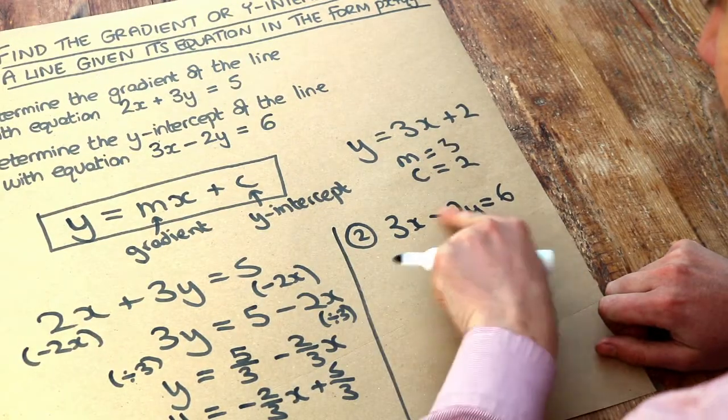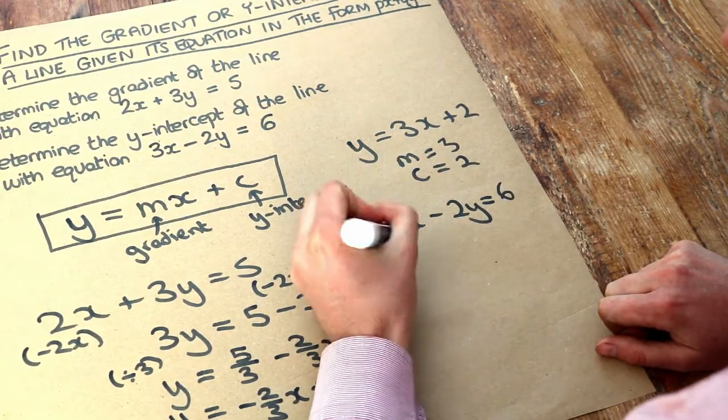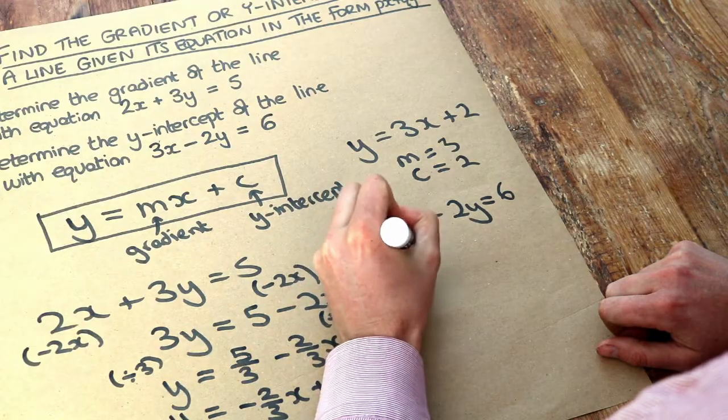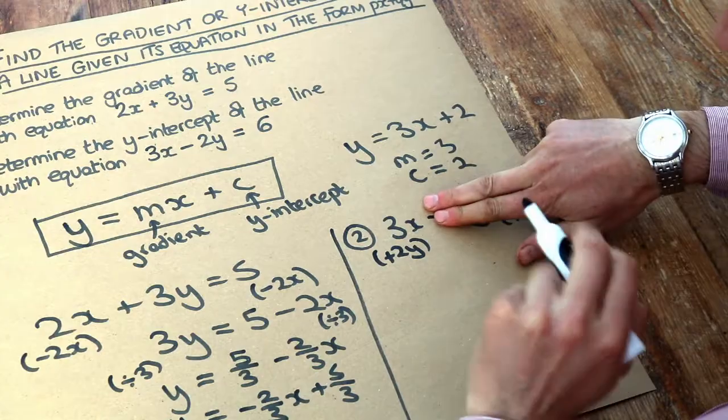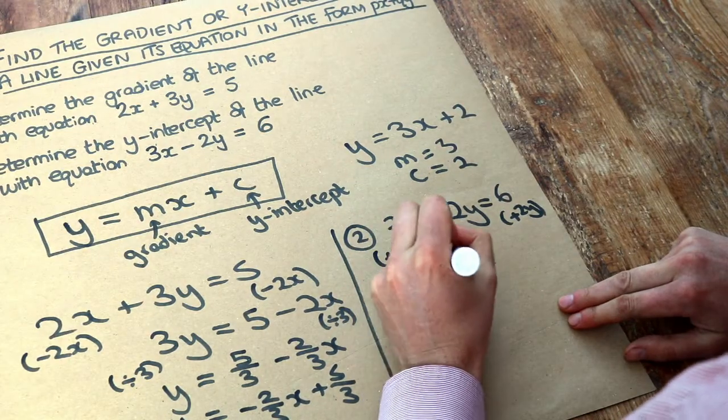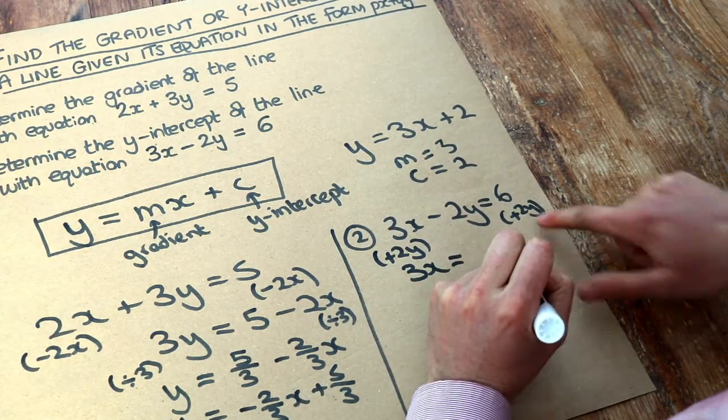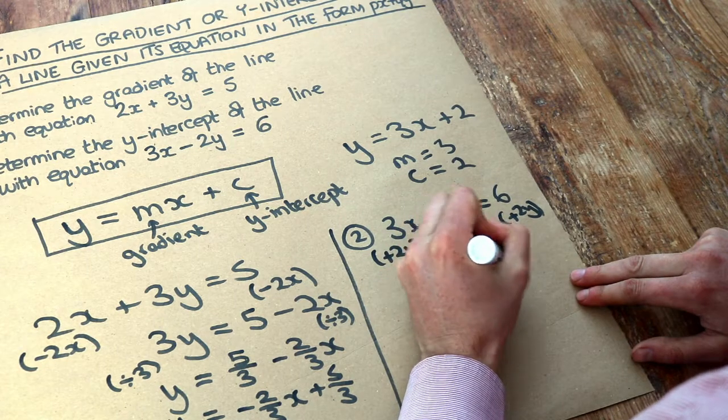Now we don't like y being the negative term, so we're going to add 2y to both sides so it becomes positive. That gets rid of the minus 2y here. We get 3x equals, and then we've got the 6 plus the 2y, or we could write 2y plus 6.